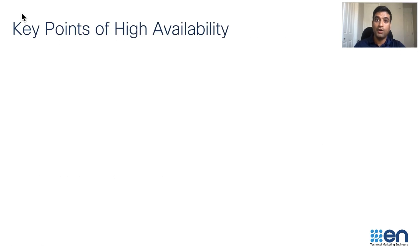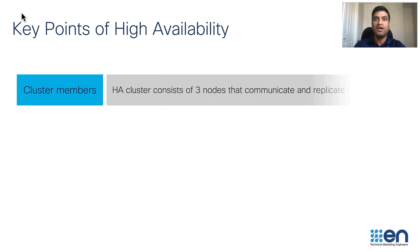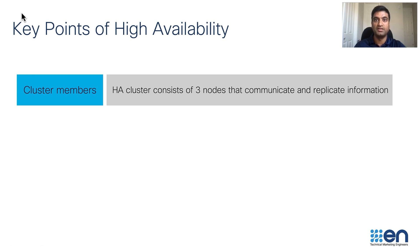I would now like to highlight some of the key points of high availability. HA clustering provides continuous service when certain system components fail. Cisco DNA Center mandates a three-node cluster configuration that communicates, shares, and replicates information to ensure high system availability, reliability, and scalability.